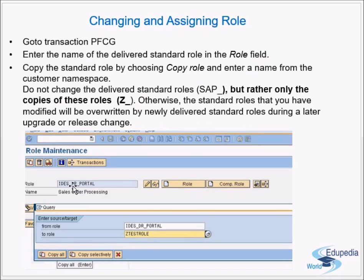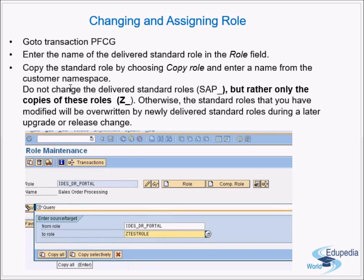Go to transaction PFCG and enter the name of the delivered standard role in the role field. This is how the initial screen looks — PFCG role maintenance — where you change and assign the role. Enter the role you want to change, then copy the standard role by choosing 'Copy Role' and enter a new name from the customer namespace.